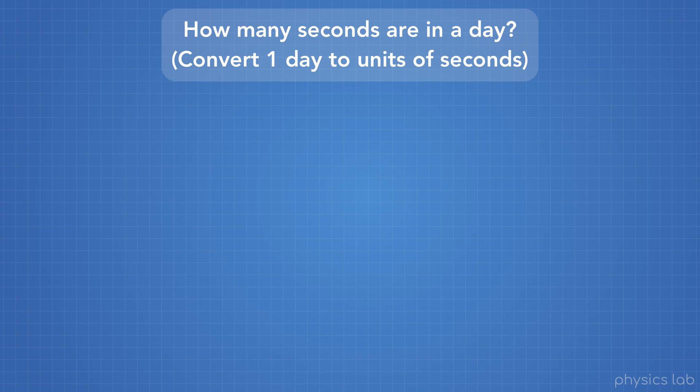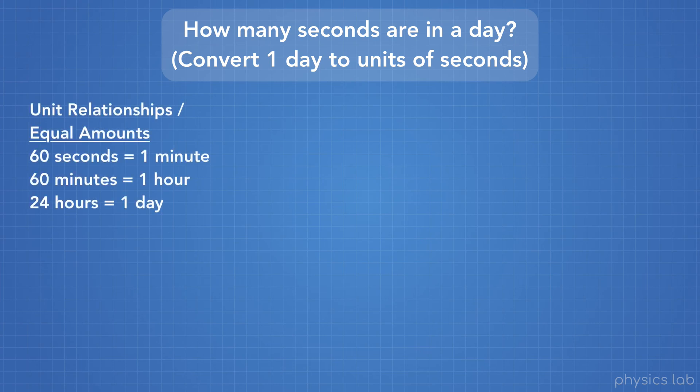So first, in order to convert between units, you need to know what the relationships are between the units that you're working with. You might know these off the top of your head, or they might be given to you. In our case, we know that 60 seconds equals 1 minute, 60 minutes equals 1 hour, and 24 hours equals 1 day.